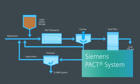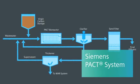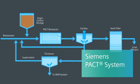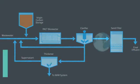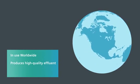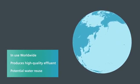Siemens PACT system integrates powdered activated carbon adsorption and biological wastewater treatment into a single process. It is used around the world to produce high-quality effluent that, in many cases, allows for beneficial reuse of these difficult-to-treat wastewater streams.